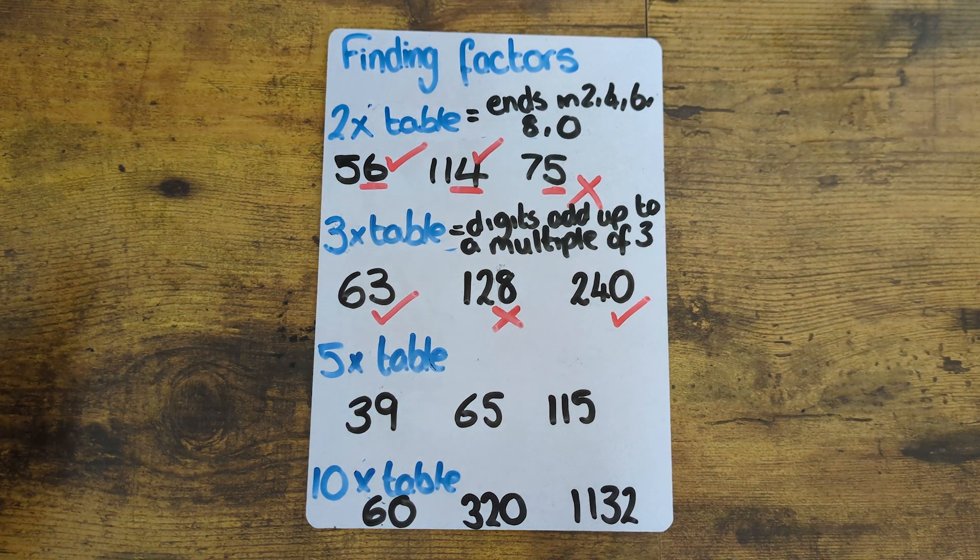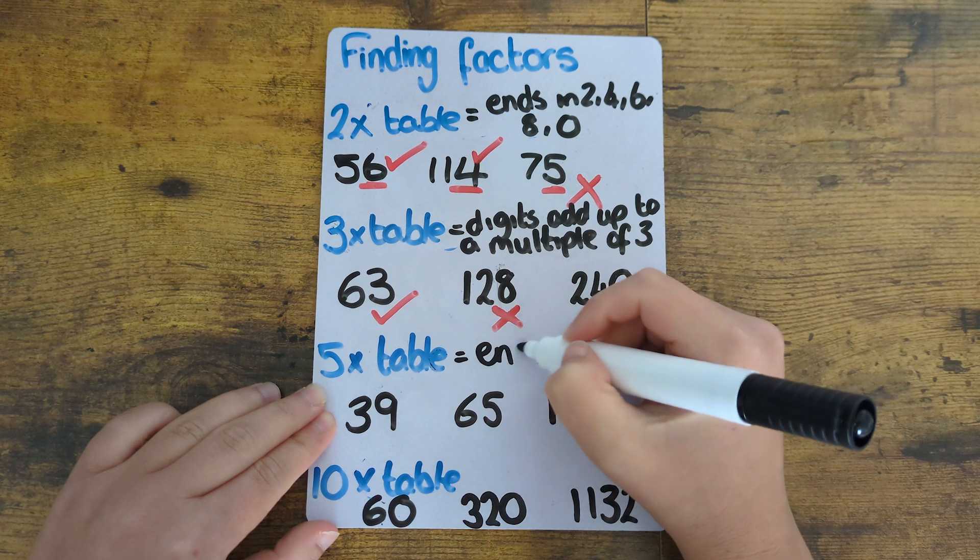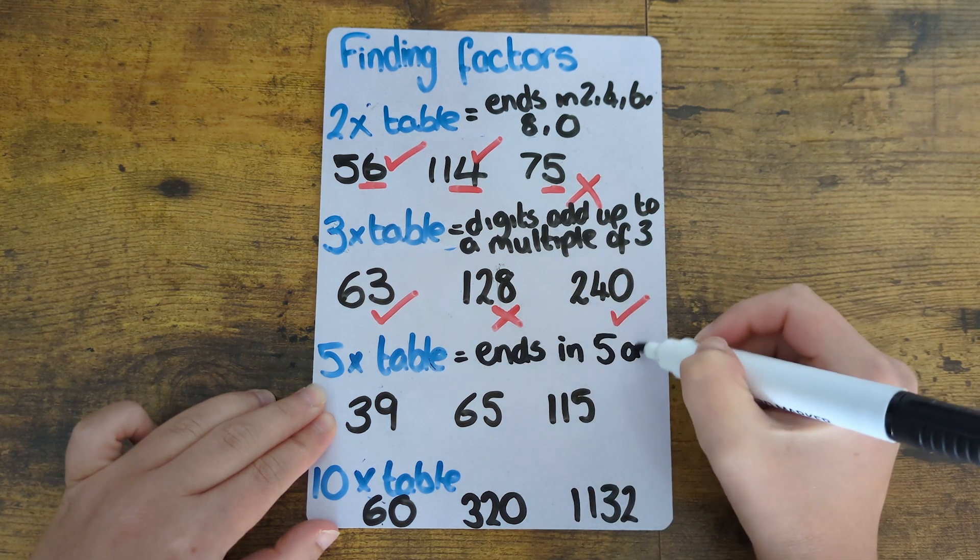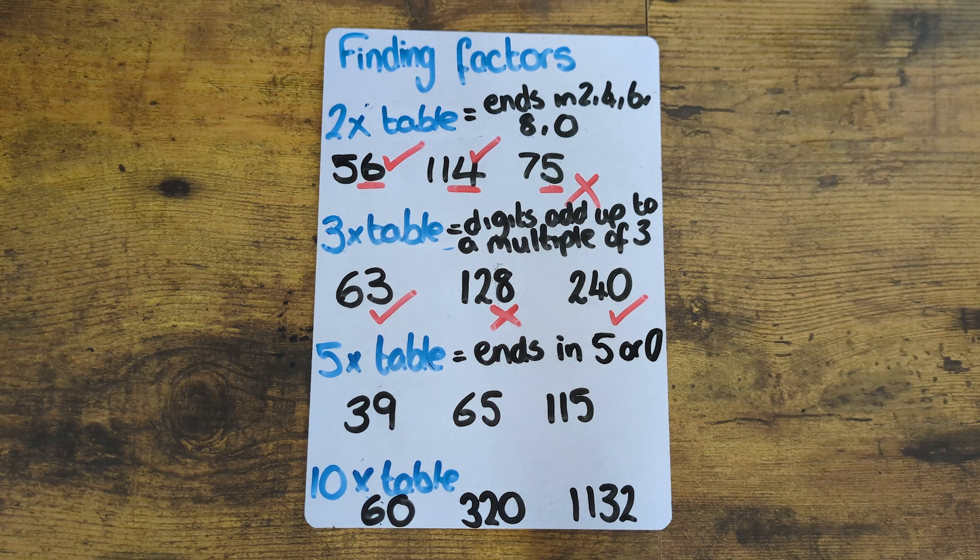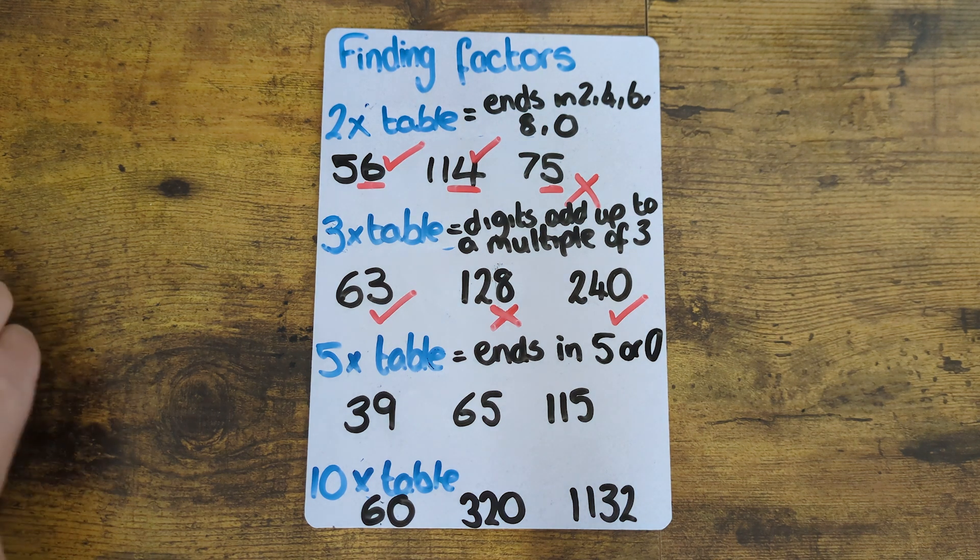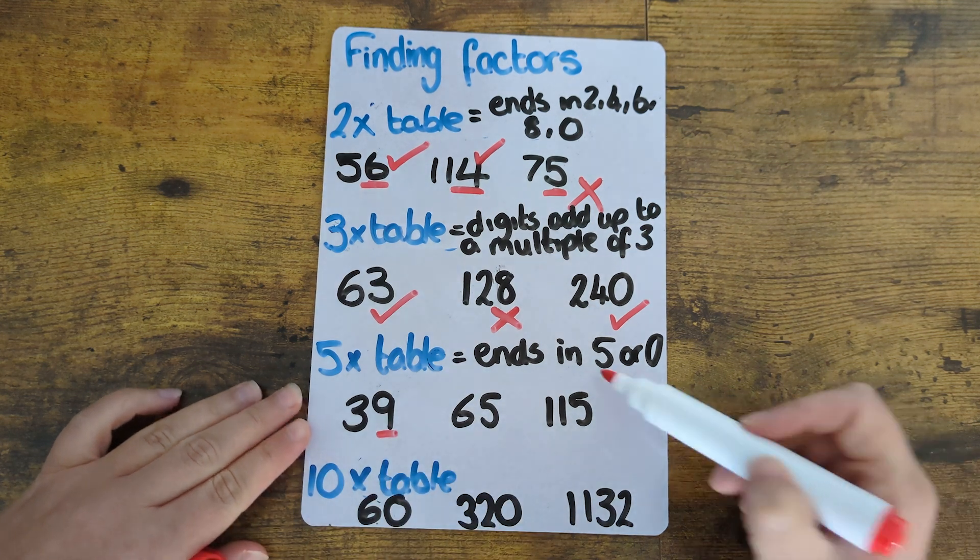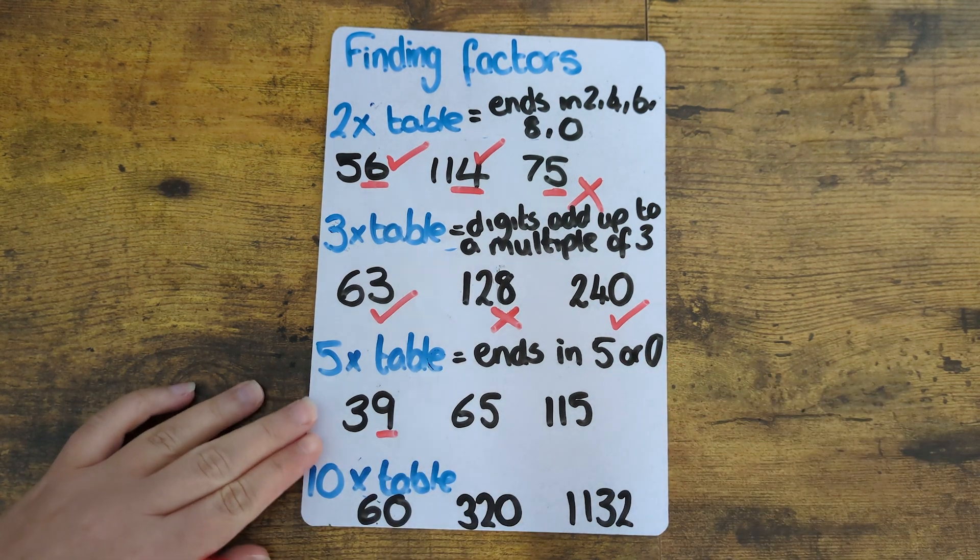Now we're going to look at the five times table. This is a nice one. So a number is in the five times table if it ends in a five or a zero. So 39 ends in a nine that's not a five or a zero so 39 will not be in the five times table.